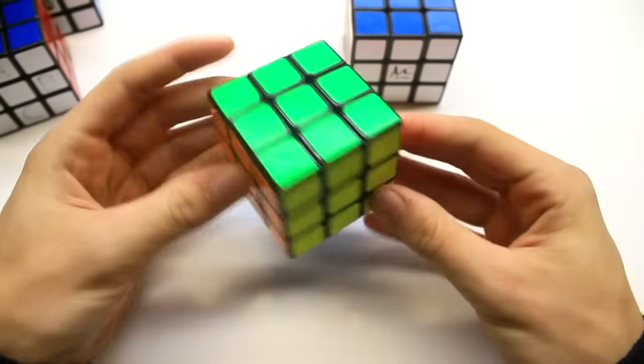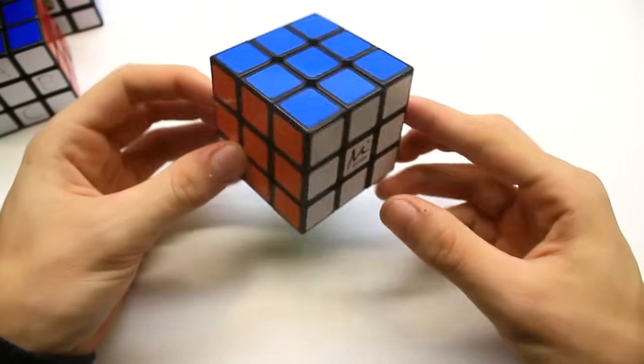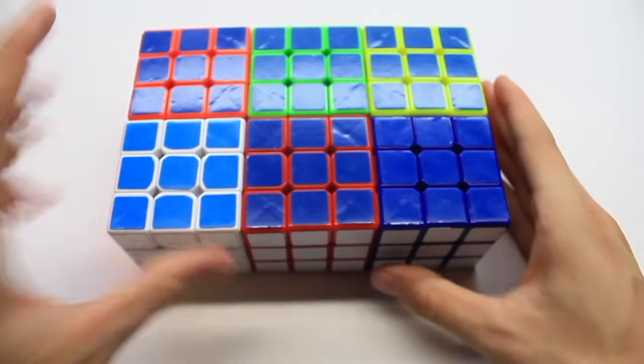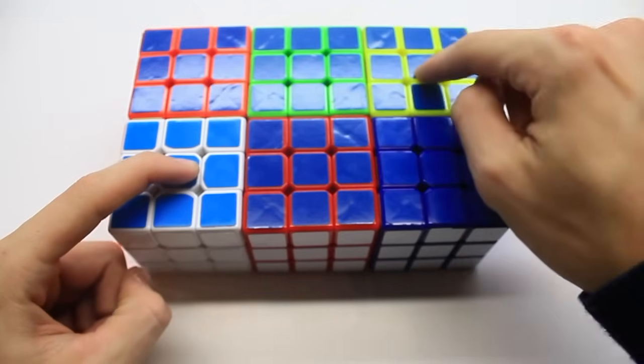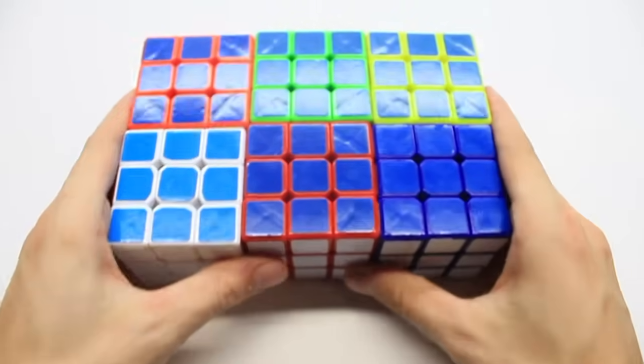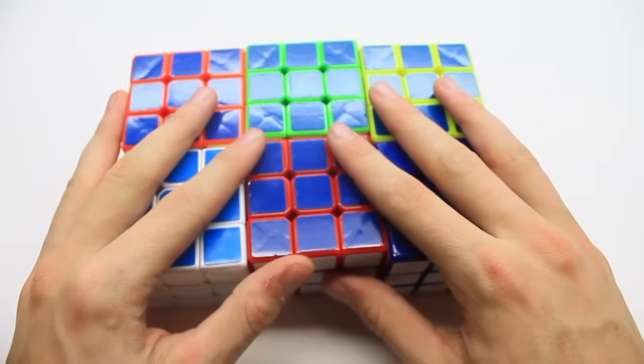This is a Dayan Zhanchi and this is the Maru CX3. So this is the white, red, blue, yellow, green, and orange Cyclone Boys Feiwu. I made these into force cubes.